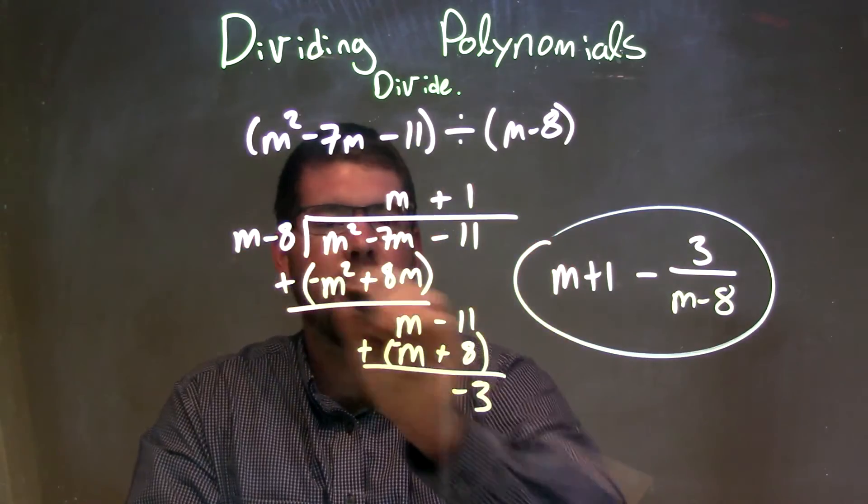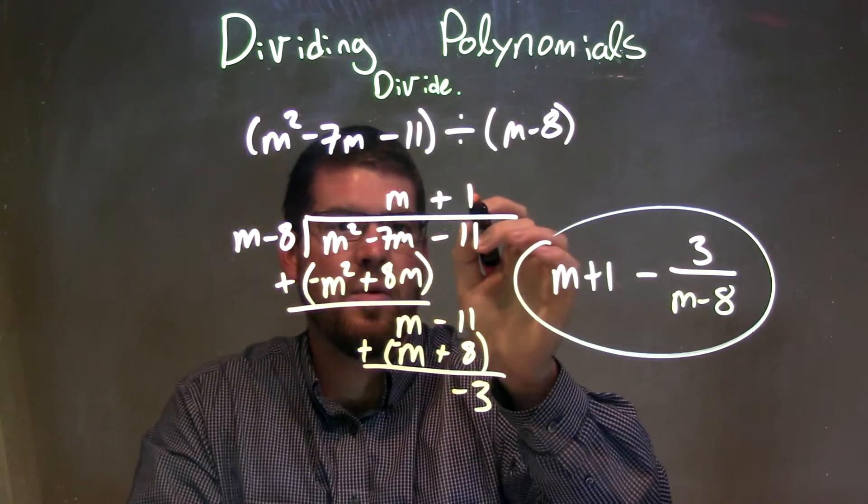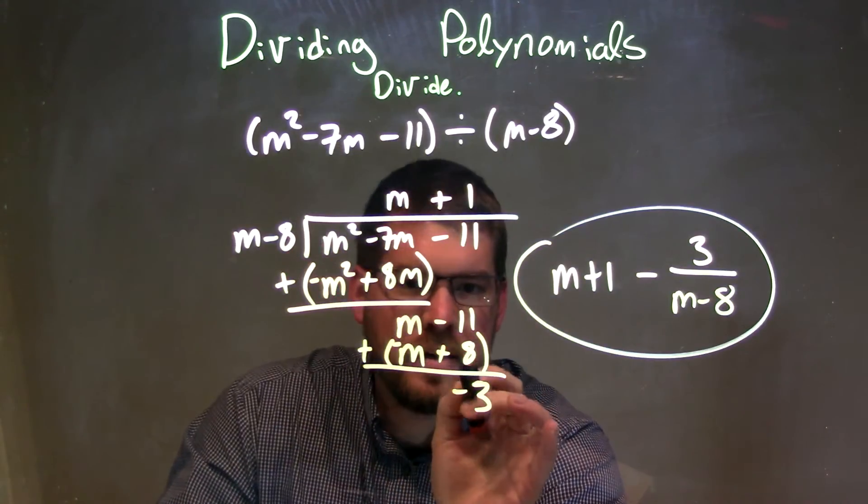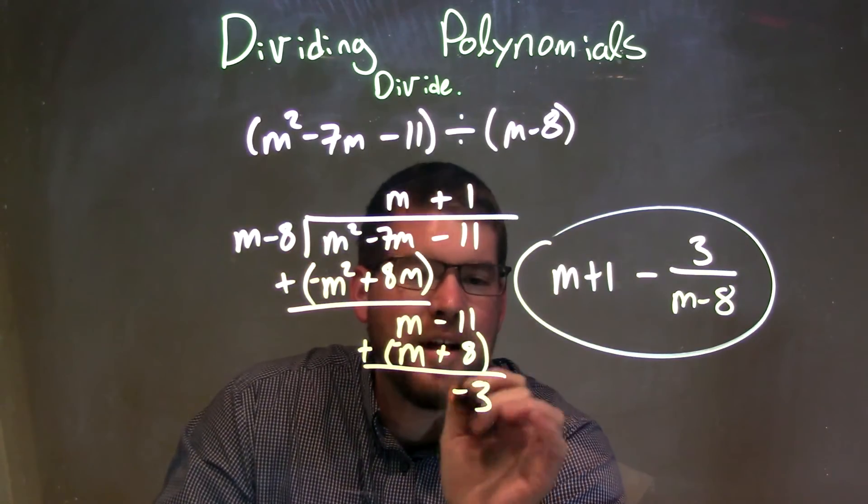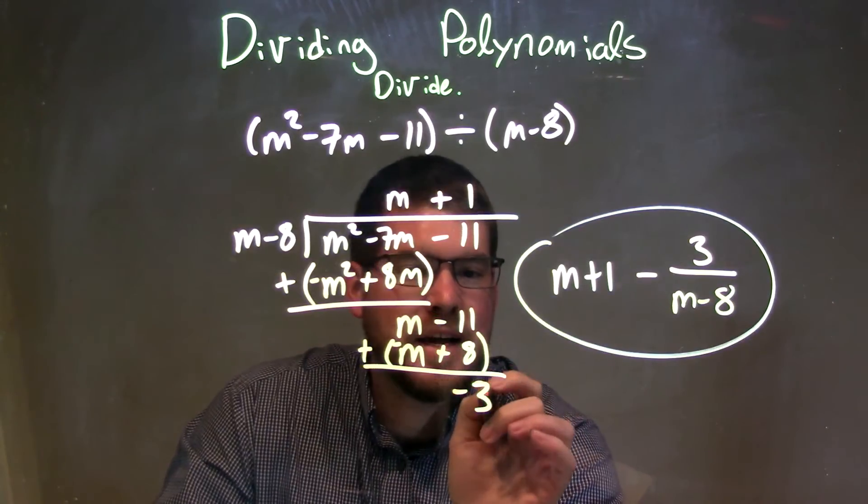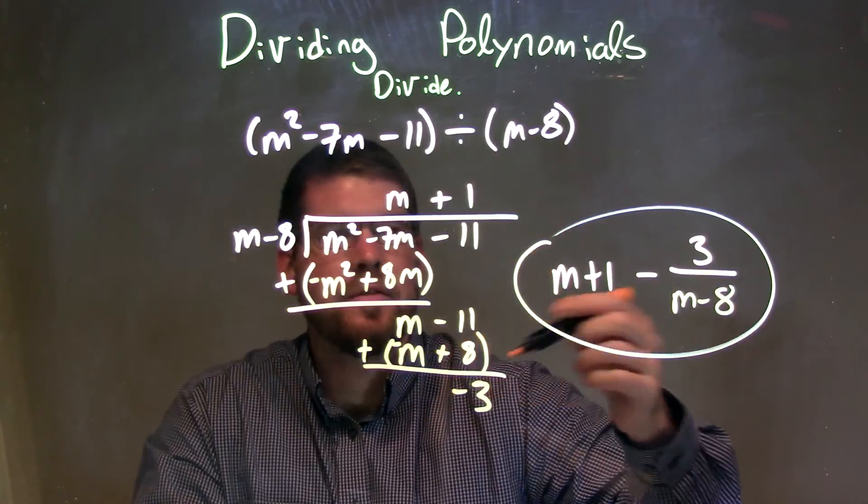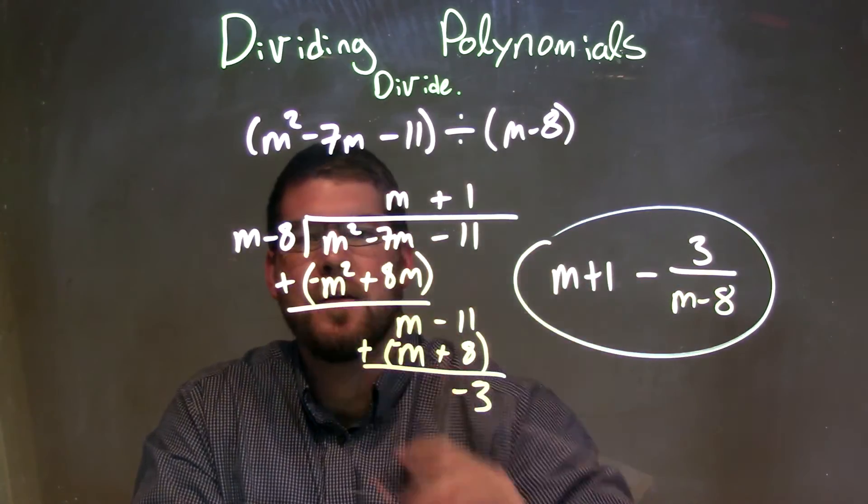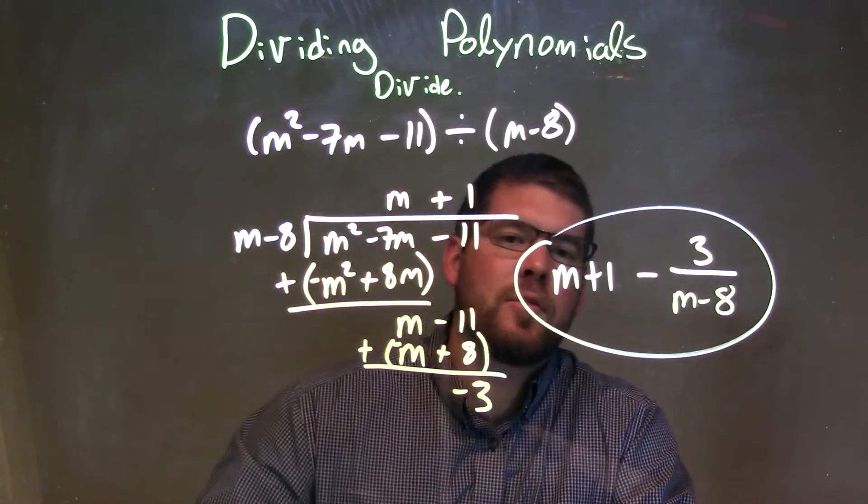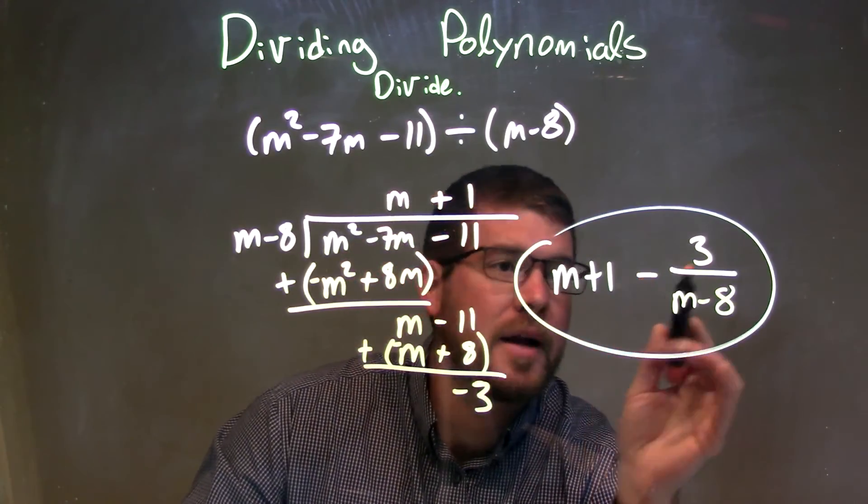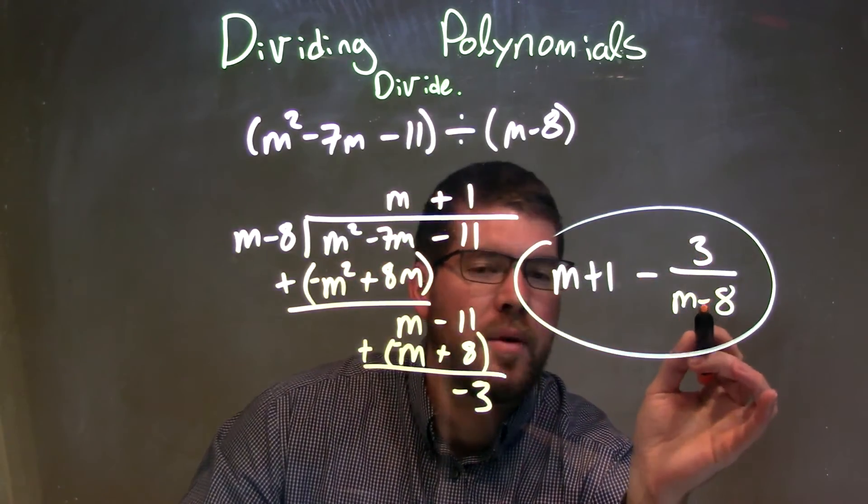Then I ask the same question for the ones place. 1 times m gives me m. We multiply by minus 8 again here. We subtracted them, and that left this remainder, which is negative 3. That remainder goes up top in our final answer, divided by m minus 8. So our final answer is m plus 1 minus 3 over m minus 8.